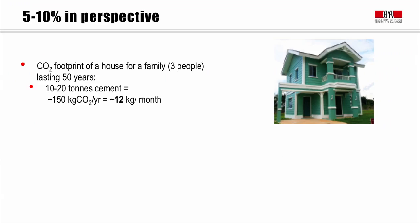What we do with our lives and the CO2 produced is a question of choices. If we decide to build a house for a family of three people, this will typically take about 10 to 20 tons of cement and last for about 50 years. We can calculate from that that the CO2 associated with the materials in your house is about 12 kilograms a month.